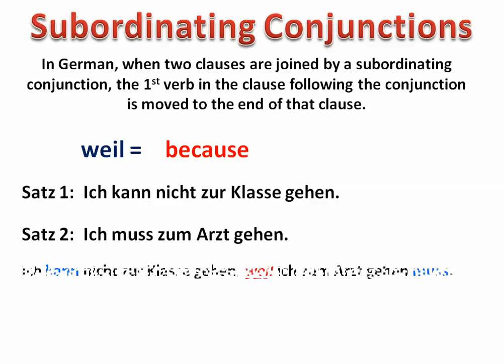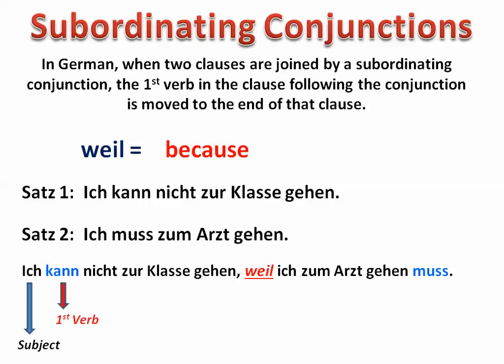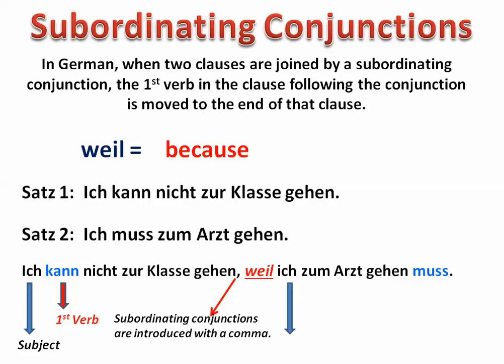If we combine the sentences using 'weil,' you're going to notice something changes. The first clause stands just as it would: 'Ich kann nicht zur Klasse gehen.' Then I put a comma to set off the subordinating conjunction, and I write 'weil.' In the first clause, the subject and first verb stayed in the same basic order, but in the second clause the subject stayed in place while that first verb after the subject moved to the end of the clause.